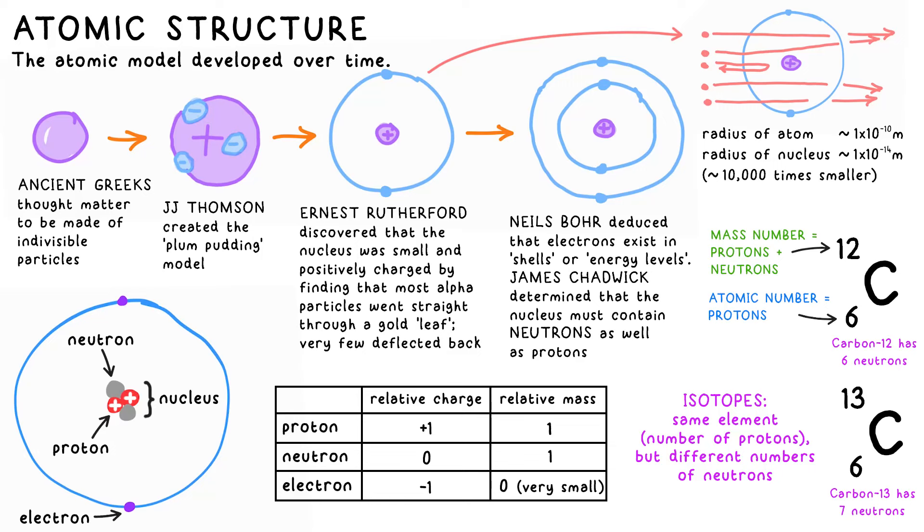However, you can get a carbon atom with seven neutrons instead, so its mass is 13. These are isotopes, atoms of the same element, but different numbers of neutrons.